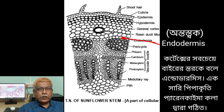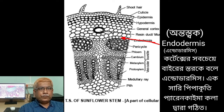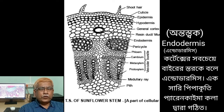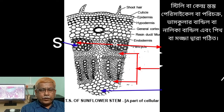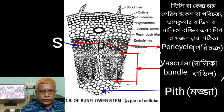Endodermis is the outermost layer of cortex. It is a single layer consisting of barrel-shaped parenchymatous cells. This layer — endodermis — contains starch grains. Hence, endodermis is called starch sheath.